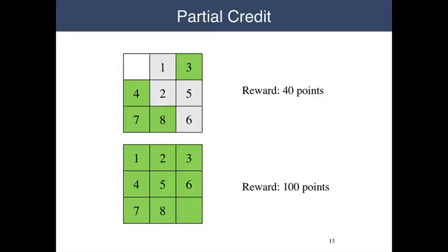In some versions of the game, partial credit is given for states that approximate the ultimate goal, with ten points being allocated for each numbered tile in the correct position, and twenty points being allocated for having the empty tile in the correct position.